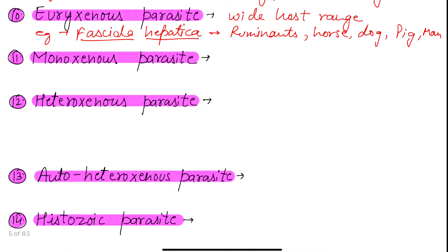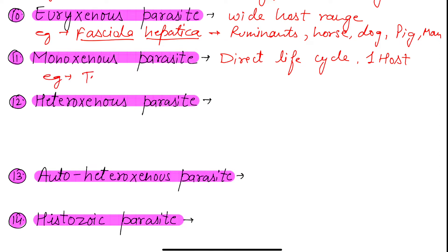Next we have the monoxenous parasite. Monoxenous parasites are those parasites which have a direct life cycle. This means there is no involvement of any intermediate host — only one host is required. Examples of monoxenous parasites are Toxocara and Haemonchus. We will discuss these in detail later.